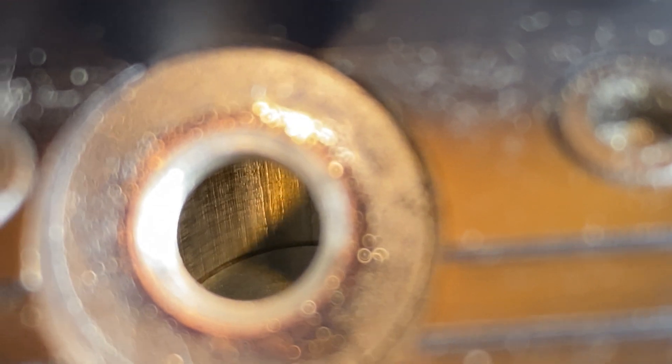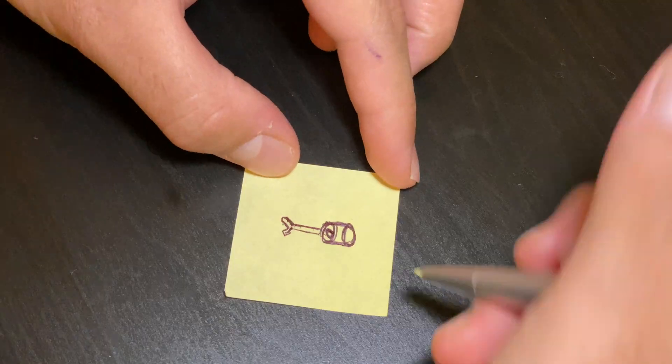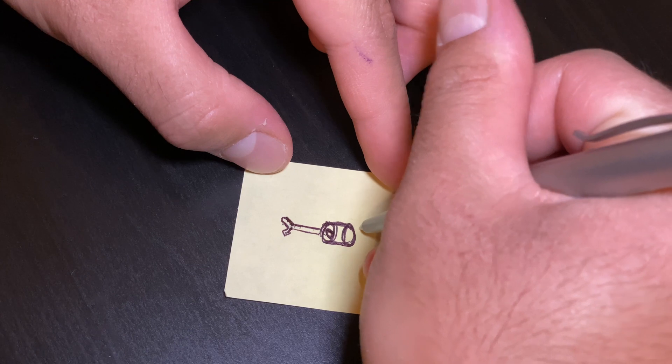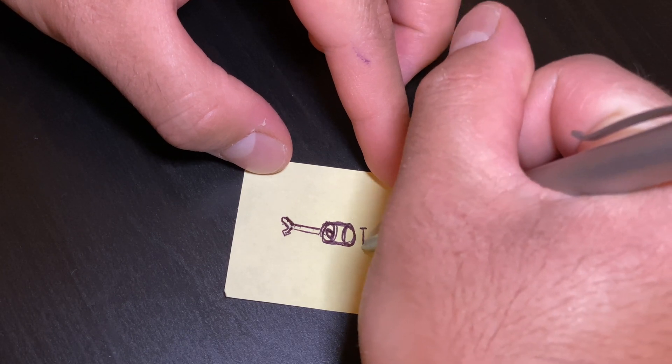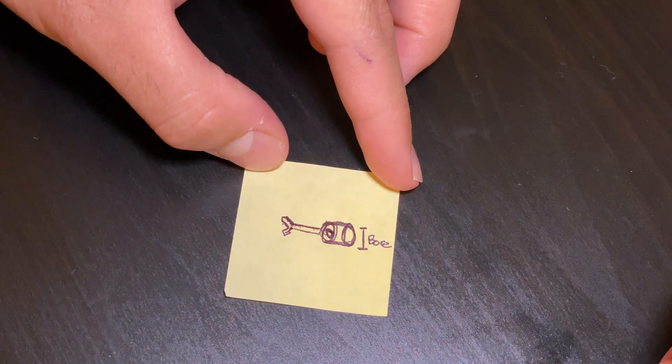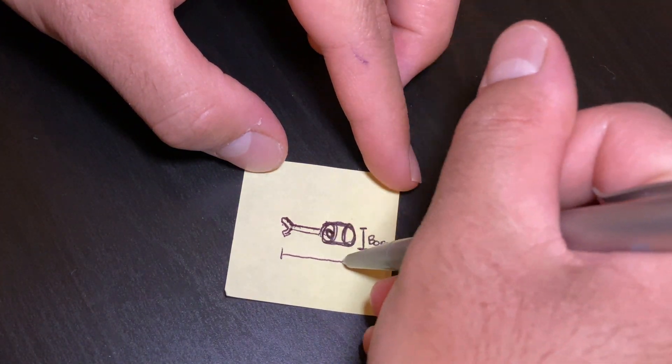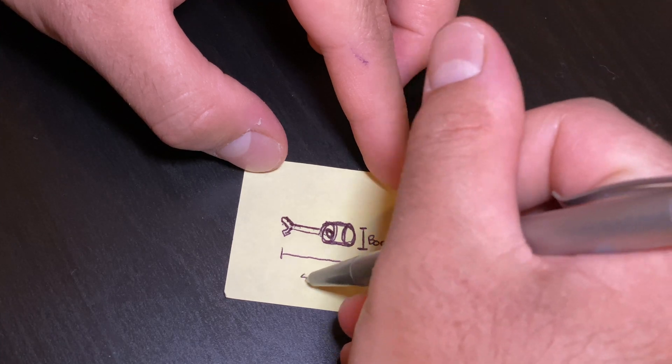So the piston would move like this, it would move up and down, and the stroke would be measured from when the piston is all the way on the bottom, just like this, and then up to the top. So the bore would be the diameter of the cylinder, so this would be the bore. The stroke is the distance that the piston travels, so this would be the stroke.